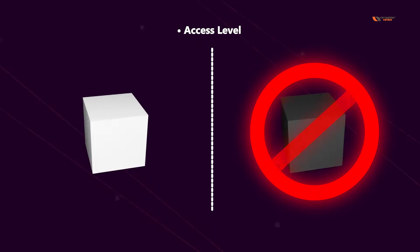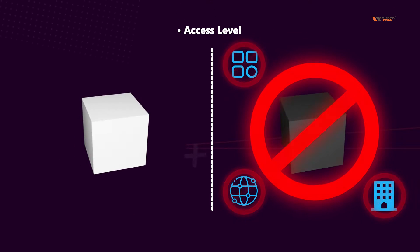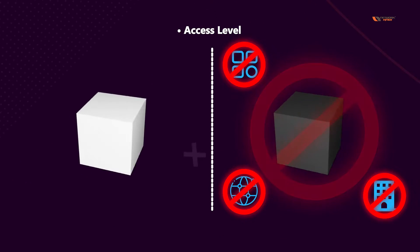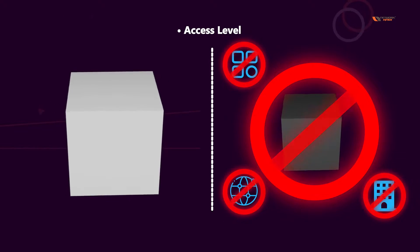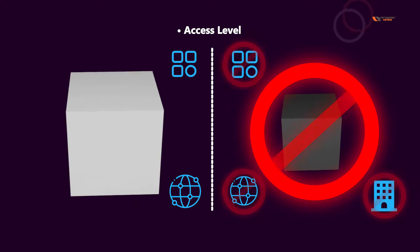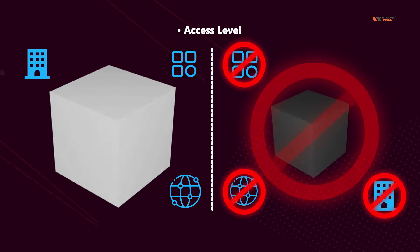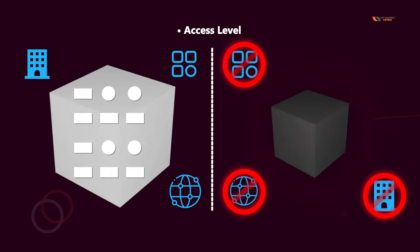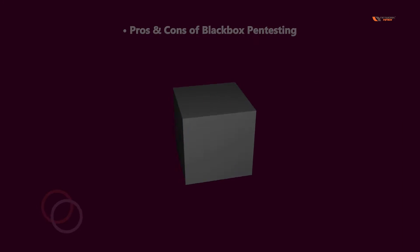Talking about access level: in black box pen testing there is zero access to internal information — the attacker has to do everything by themselves. Whereas in white box pen testing, the pen tester has open access to all the systems, all the infrastructure, and they'll have access to network diagrams.